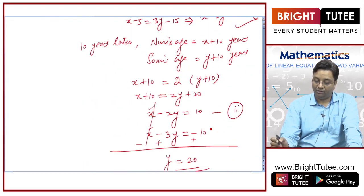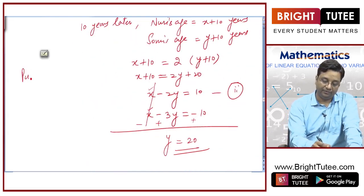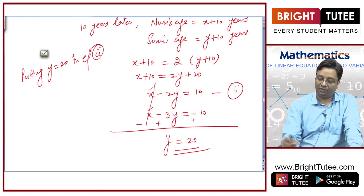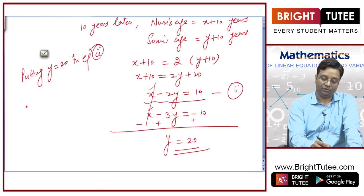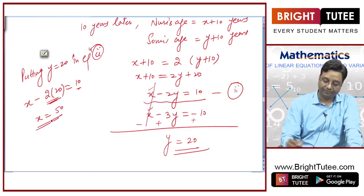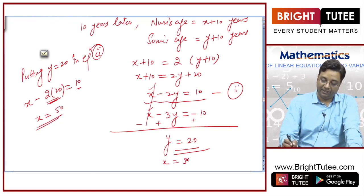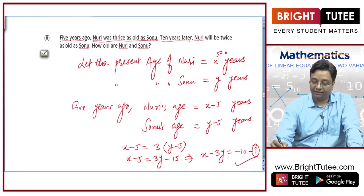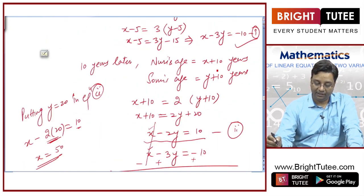Now, putting y equal to 20 in equation 2: x minus 2 into 20 is equal to 10. So, x is equal to 40 plus 10, that is 50. So, Nuri's age is 50 years and Sonu's age is 20 years.